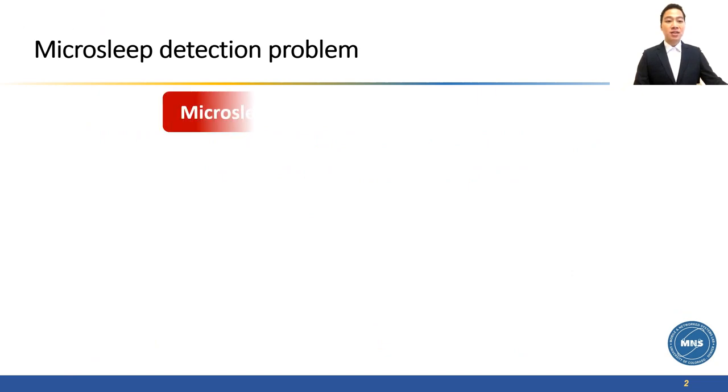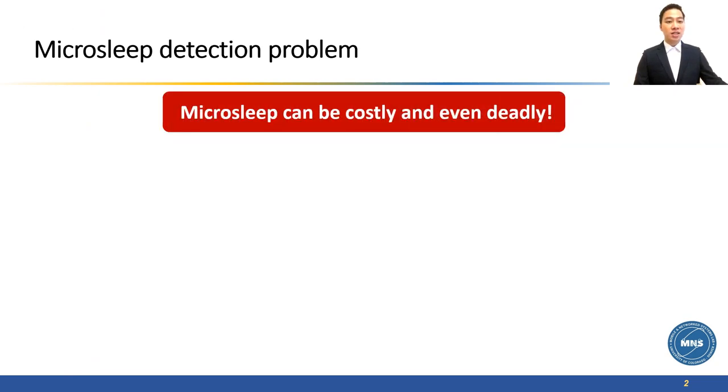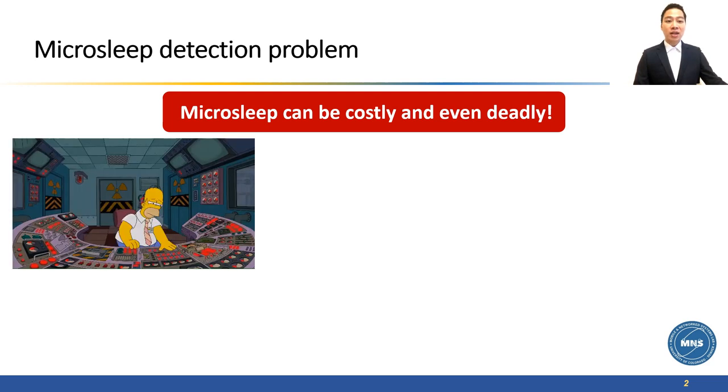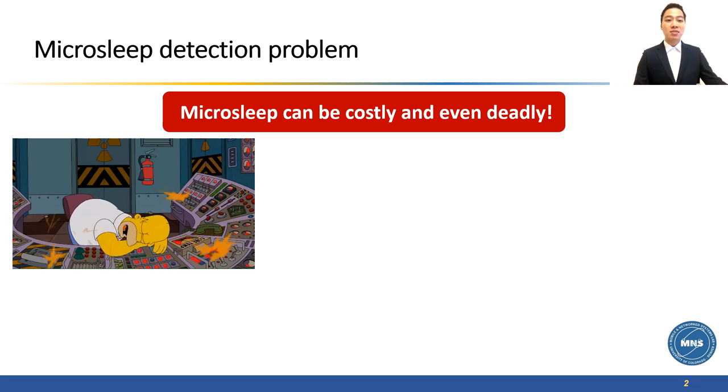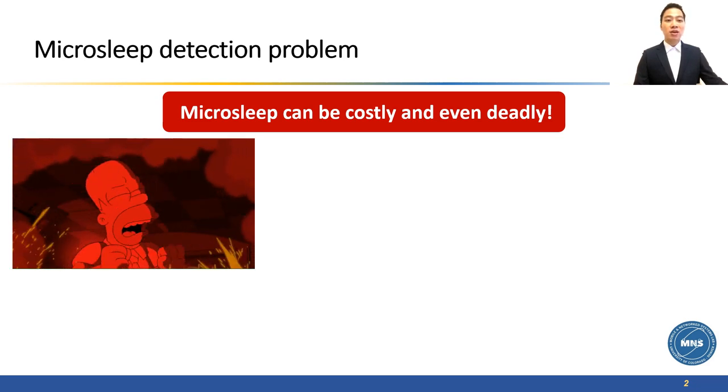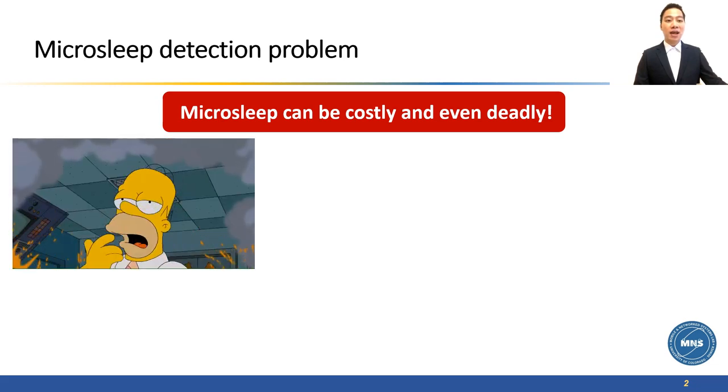Microsleep is a period that our brain loses the consciousness of the surrounding environment. It can be costly and even deadly. To get an idea about it, we can write a short clip about Simpson, who is experiencing frequent microsleep during his work at a nuclear power plant.